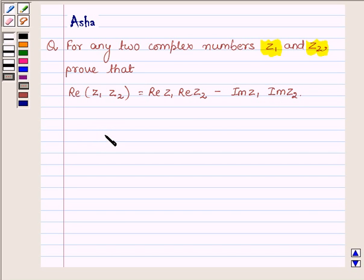Now as we know, a complex number is of the form A plus i times B, where A is the real part of Z.